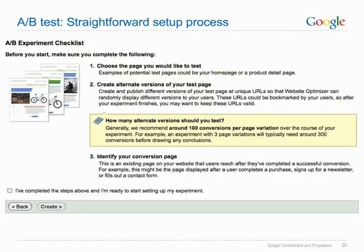Before you set up your A/B test, it's important to look at the following checklist. Number one, choose the page you'd like to test. Two, create alternate versions of the test page. And three, identify your conversion page. Once you've considered all three steps, you're ready to start your experiment.